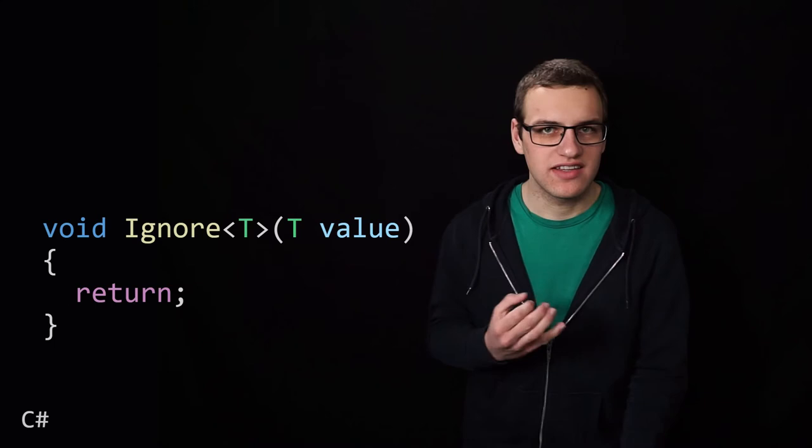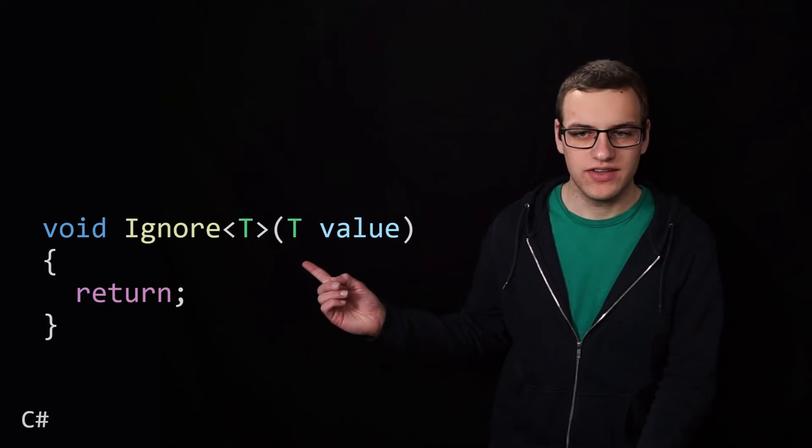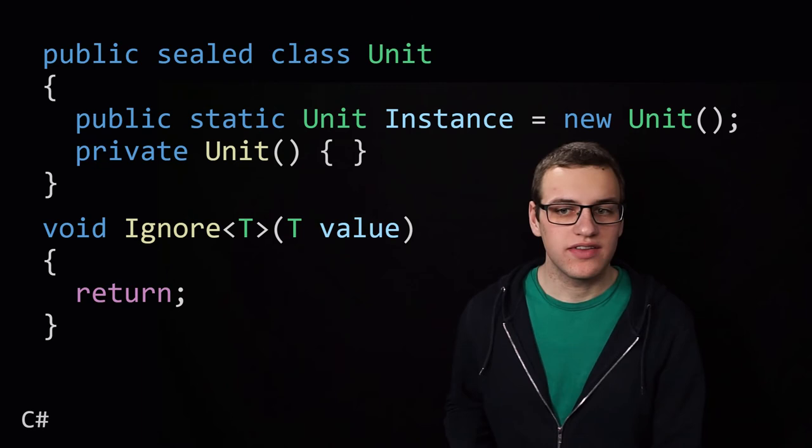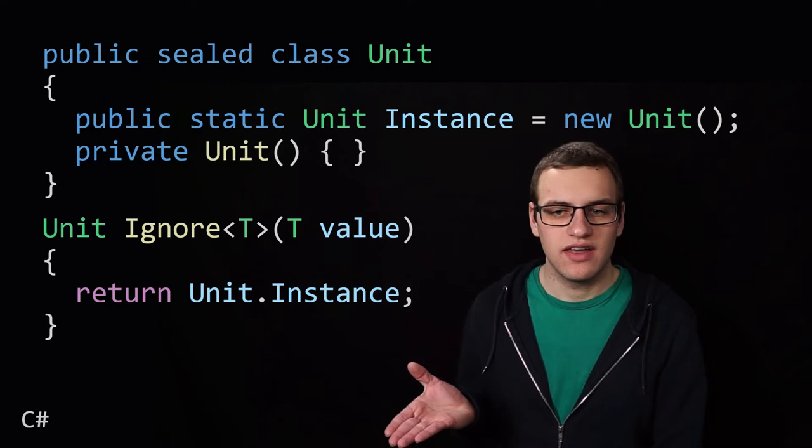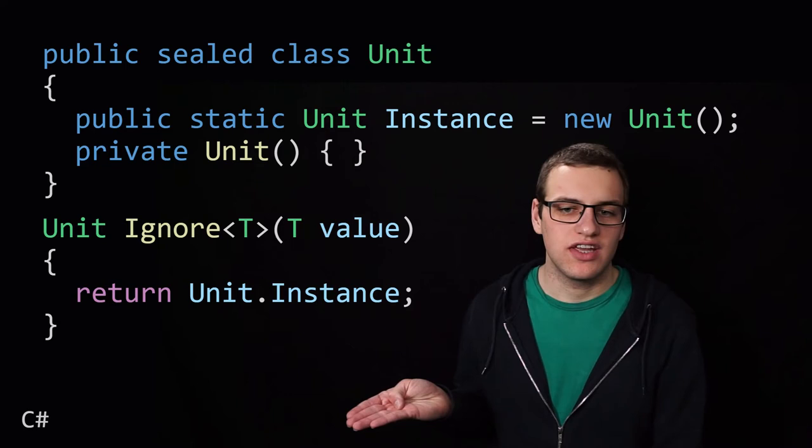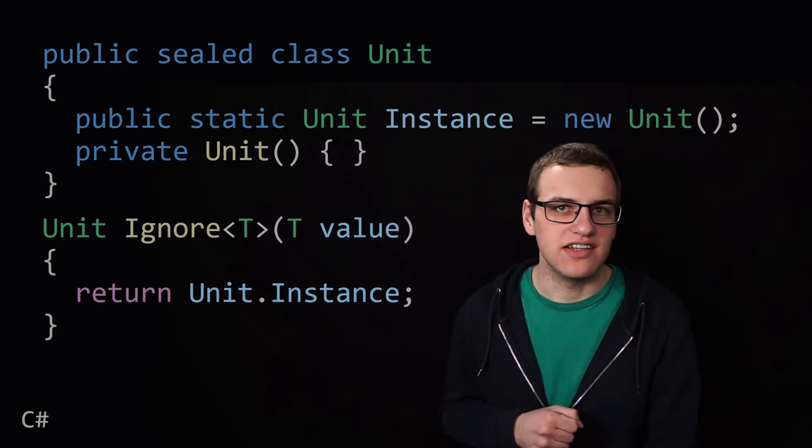This unit type is actually the same as the void type you may recognize from imperative languages. Let's take a look at this example. So here we have a C-sharp function that returns void, and we can define a unit type using the standard singleton pattern. And as you can see, we can then rewrite our function that returns void as a function that returns unit. And because it will always return the same instance of unit, we haven't added any information. These functions are basically the same.